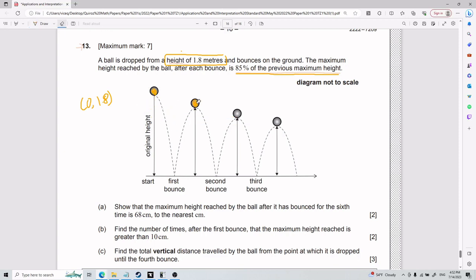Alright, for part A, we need to show that the maximum height reached by the ball after it has bounced for the sixth time is 68 centimeters. Okay, so here, I think the tough part is actually identifying what type of problem it is. And so, because we have an initial bounce, the first one, second, third, fourth, etc. You can kind of look at it as a sequence. And so this is a sequence that is decreasing by a certain amount.